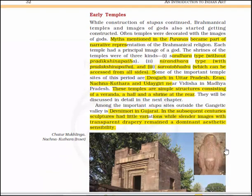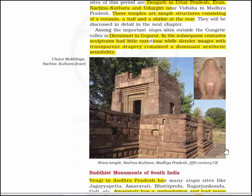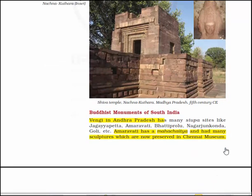Among the important stupa sites outside the Gangetic Valley is Devni Mori in Gujarat. In subsequent centuries, cultures had little variations while slender images with transparent drapery remained the dominant aesthetic sensibility. Here you will see the image of the Chatur Mukhalinga at the Nachna Kuthara temple — a Shiva temple in Madhya Pradesh from the 5th century CE.